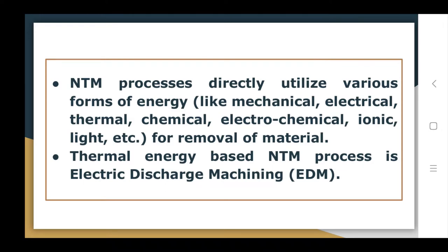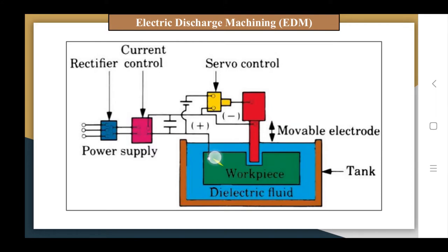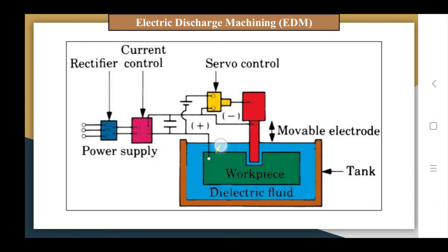The EDM process utilizes an electrically conductive tool as an electrode that has a specific shape. This electrode is brought closer to the conductive workpiece, and a small gap of 0.2 to 1 mm is continuously maintained between the workpiece and tool. When this inter-electrode gap is filled with a suitable dielectric fluid, the conductive tool and conductive workpiece act as two electrodes in the electrical circuit.